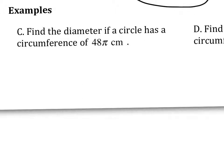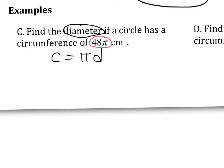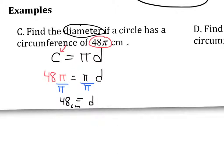In example C, I'm asked to find the diameter of the circle if it has a circumference of 48 pi. I can still start with the formula C = pi d. Why did I choose this one? Because they asked me to find the diameter. So now I'm going to place 48 pi in for C, giving me 48 pi equals pi times d. To get d by itself, I divide both sides by pi. So I get d equals 48 centimeters. Notice the equals sign stays — there is no approximate value, since I never plugged pi into my calculator.